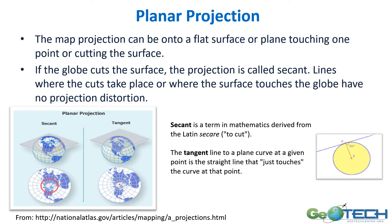For a planar map projection — going from 3D to 2D to a flat surface — it can touch the globe in one point, or it can cut through the surface. If the plane cuts the surface, the projection is called a secant. Lines where the cut takes place, or where the surface touches the globe, have no projection distortion. Here are two examples: where we have a secant cutting through the plane, you can see the red surface area that has little to no distortion, and where it just touches in one spot, only at that one spot is there little distortion.